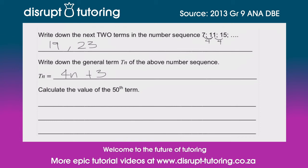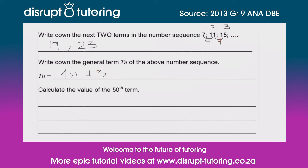Before we move on, we need to make sure this works. So let's try it out with the third term. Remember: this is the first term, second term, third term. Let's put in a 3: 4 times 3 is 12, plus 3 gives me 15. Perfect — we know that 4n + 3 is the general term, and it's going to be able to give us any term in the sequence.